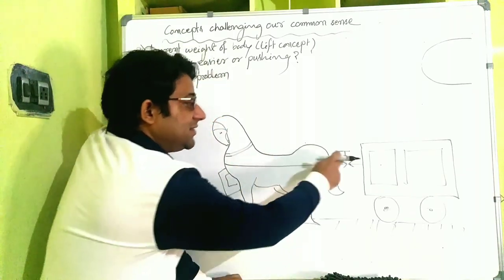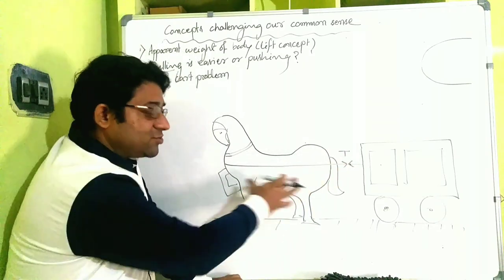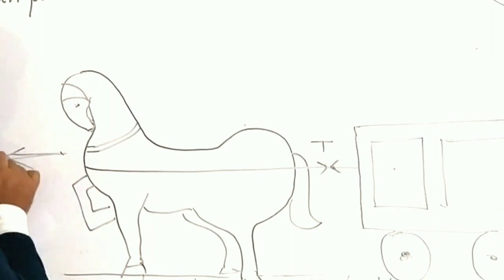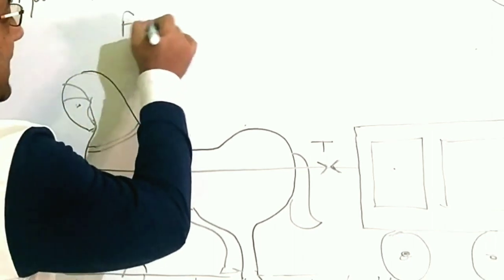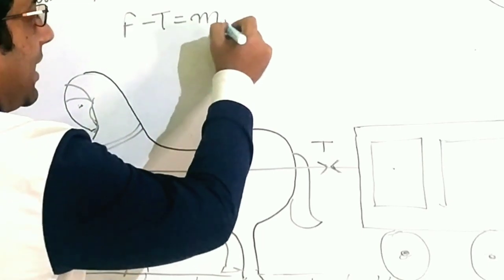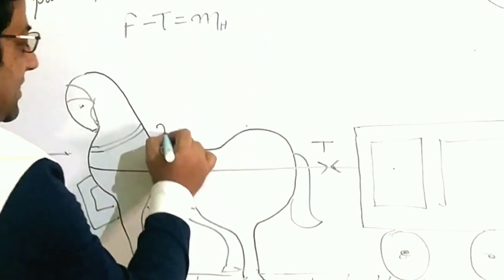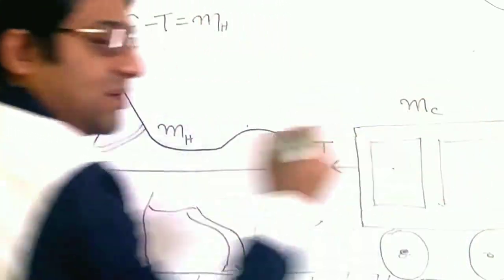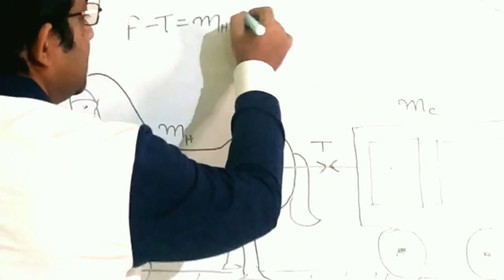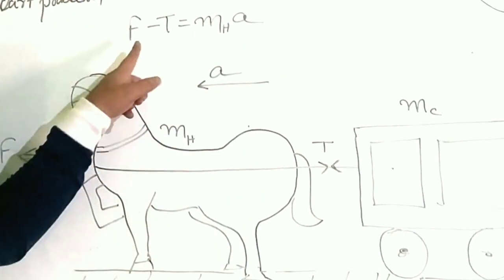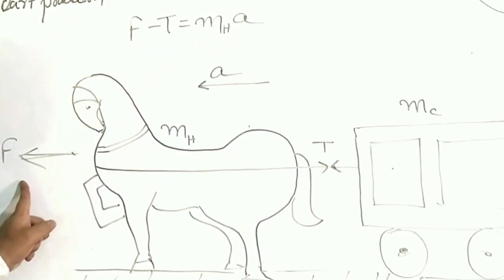The horse gave one action, and the reaction is experienced by the horse. Because what force the horse is giving must be greater than this tension, then only it should move, right? If the horse is applying a force—some force F, let's say—then F minus T must be equal to mass of the horse mh times the acceleration. Let's say mh is the mass of the horse and mc is the mass of the cart. So mh times the acceleration, if this system is moving with acceleration a.